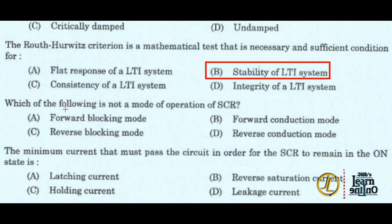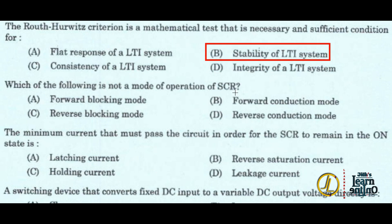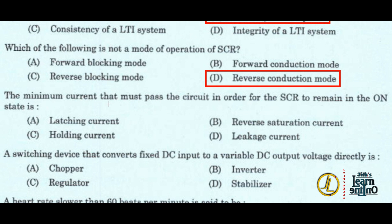Next: which of the following is not a mode of operation of an SCR? The reverse conduction mode, option B, is not an SCR operation mode. Next: the minimum current that must pass through the circuit in order for the SCR to remain in the on state is called the holding current — option C.